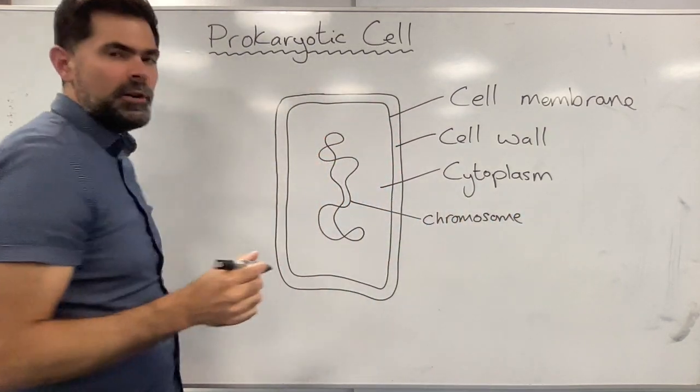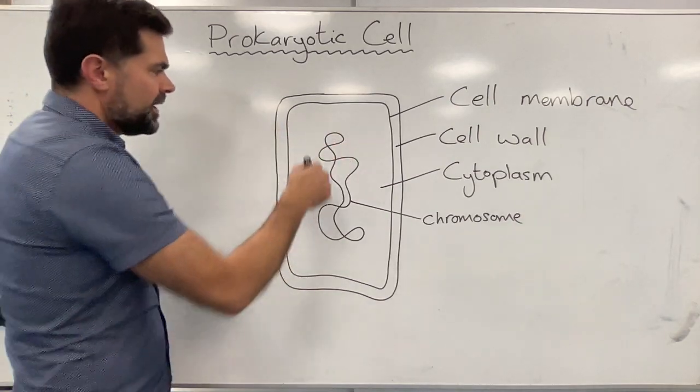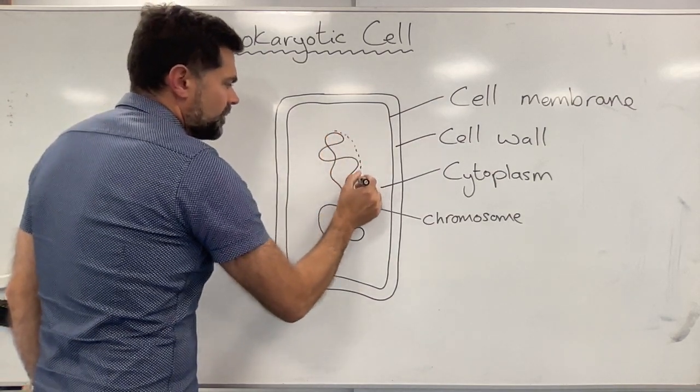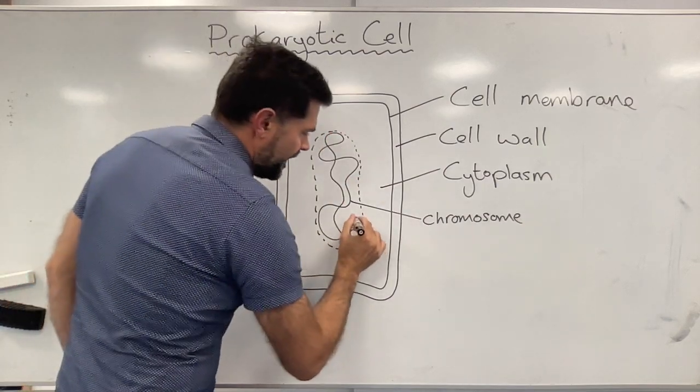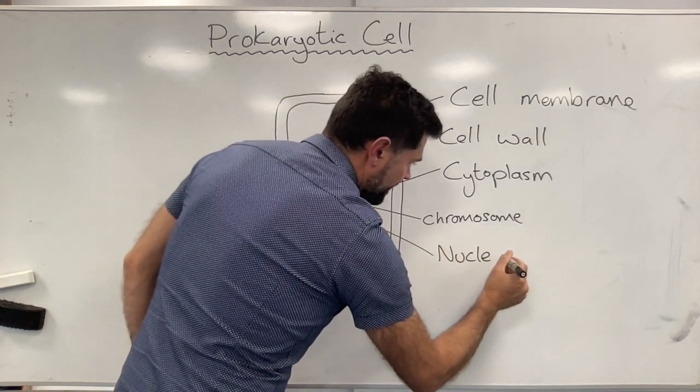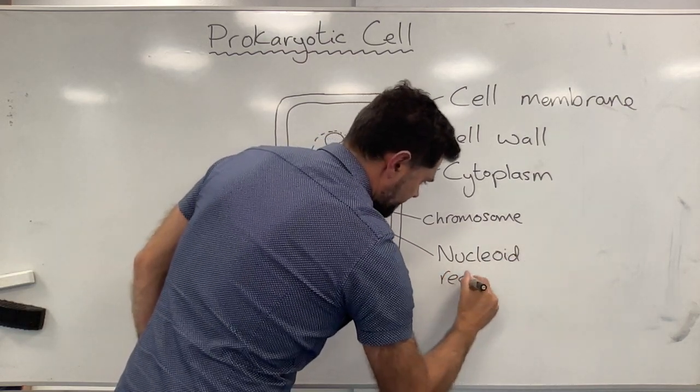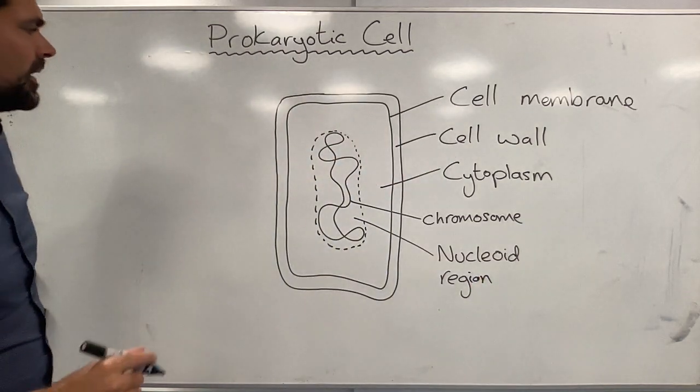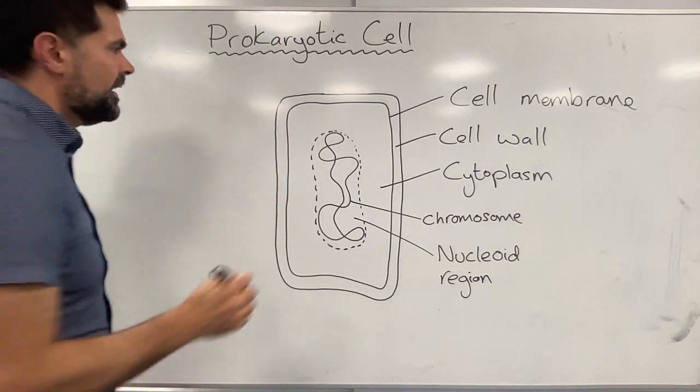When you're looking at a bacterial cell, even with an electron microscope but especially with a light microscope, you're not going to see the actual DNA. But what you normally do see is a region where the coloration is different like this. It's just got a different color and that region we call the nucleoid region.